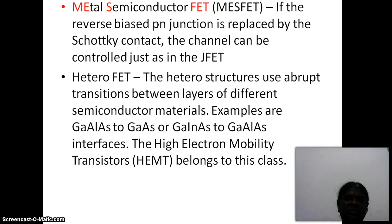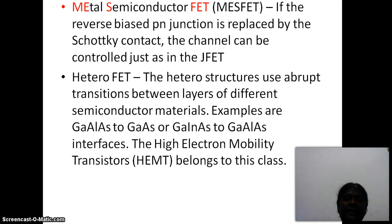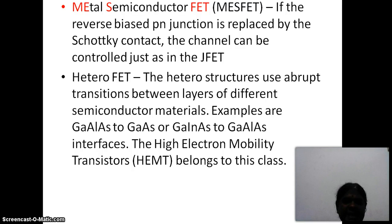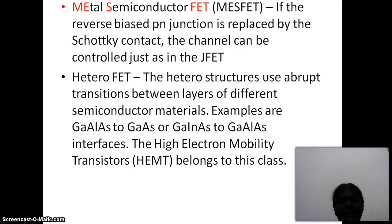Another classification of FET based on the construction is HETROFET. HETRO structures use abrupt transitions between layers of different semiconductor materials. Examples are gallium aluminium arsenide (GaAlAs) transition to GaAs, and GaInAs to GaAlAs. An example of this HETROFET is high electron mobility transistors — HEMT — which we will discuss in the forthcoming discussion.